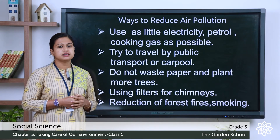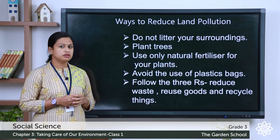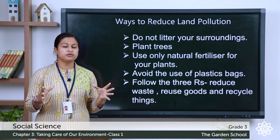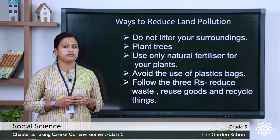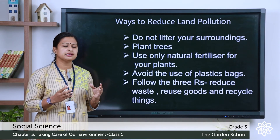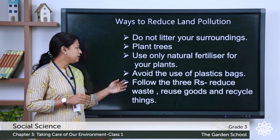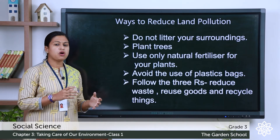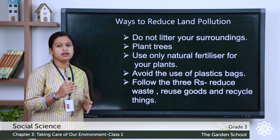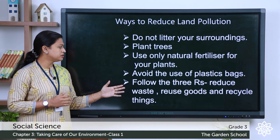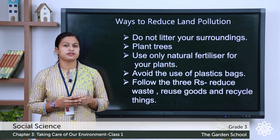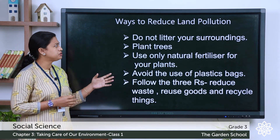Now, let's discuss steps to reduce land pollution. First, do not litter your surroundings — keep it clean. Plant more and more trees because the roots hold the soil tightly and save it from erosion. Use only natural fertilizers for your plants, as chemical fertilizers make the soil less fertile. Avoid the use of plastic bags because dumping plastic has increased the toxic level of soil. Follow the three R's: reduce waste, reuse goods, and recycle things. Instead of throwing garbage, we can use our own compost at home.